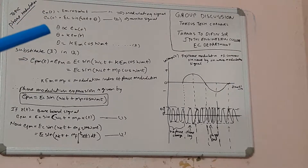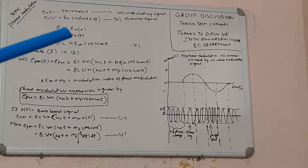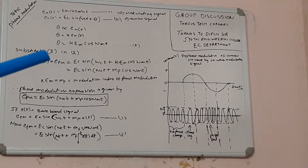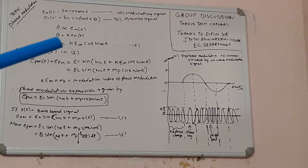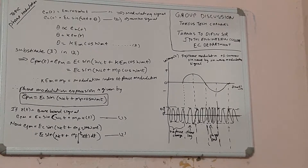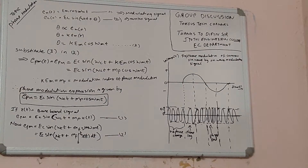We can derive an expression: θ is proportional to Em(t), so θ = k · Em(t) = k · Em cos(ωmt). Substituting the third expression into the second expression, the phase modulated wave expression is given as Ec sin(ωct + k·Em cos(ωmt)), where k·Em = mp. Therefore, the phase modulated expression is Ec sin(ωct + mp cos(ωmt)).